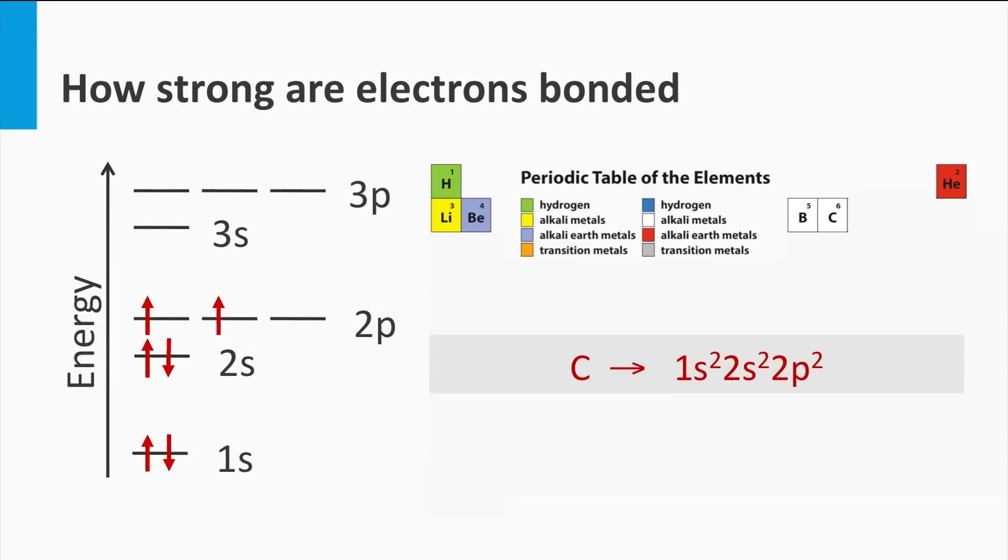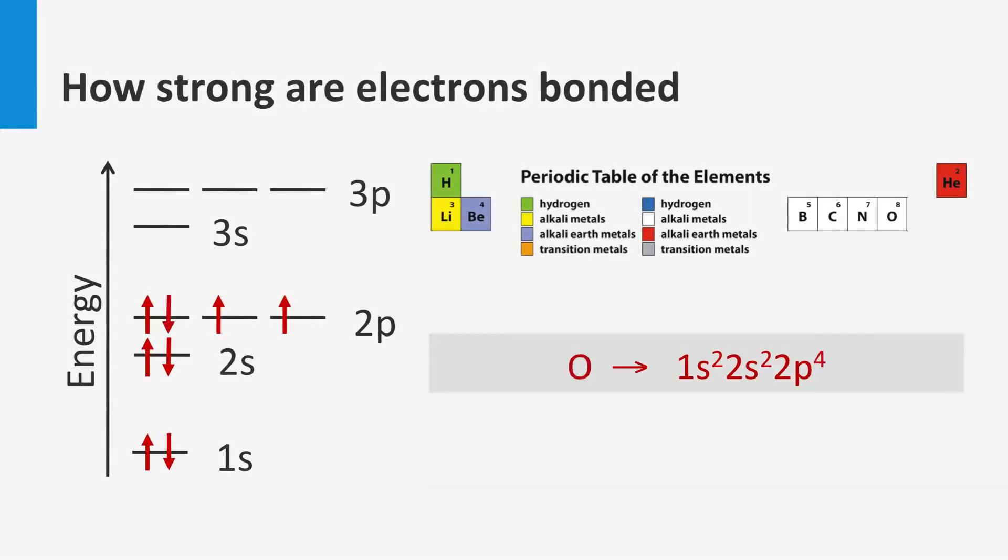The next element is nitrogen. It has seven electrons in orbit around the nucleus, and can fill up to three electrons in the 2p state. The next element is oxygen. It has eight electrons in orbit around the nucleus, and can fill up to four electrons in the 2p state.